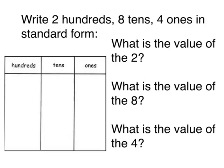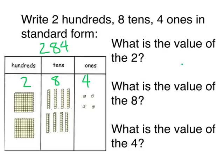Let's look at another example. This time we're given a number in unit form, and we need to write it in standard form before we find the value of each digit. Write two hundreds, eight tens, and four ones in standard form. I can plug that right into my place value chart. There are two hundreds, eight tens, and four ones. So, my number, written in standard form, is two hundred eighty-four. I'm going to represent that number now using base ten blocks. As you can see, because there was a two in the hundreds place, I have placed two hundreds; because there was an eight in the tens place, I have placed eight tens; and because there was a four in the ones place, I have placed four ones.